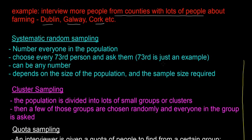Systematic random sampling is where you number everyone in the population again, and then you choose every, for example, 73rd person. It's just an example — the number can be anything. It depends on the size of the population and the required sample size. So you choose the 73rd person, the 146th person, and so on.